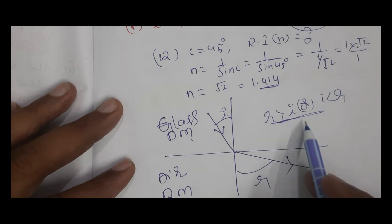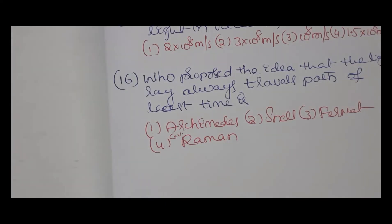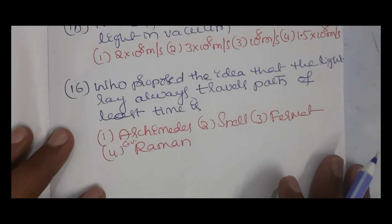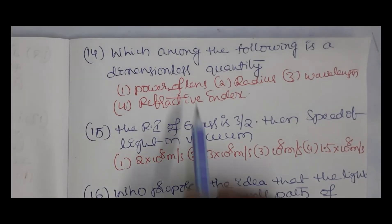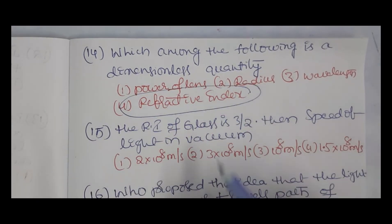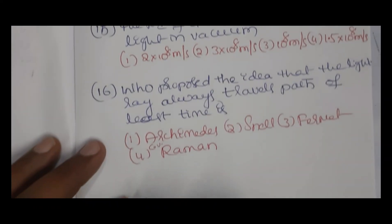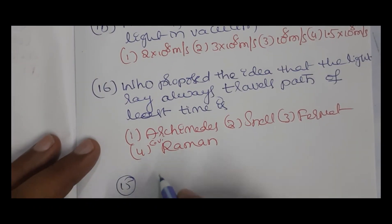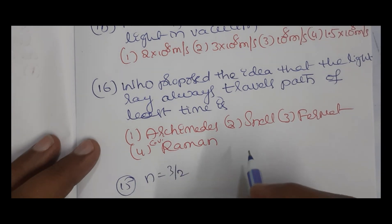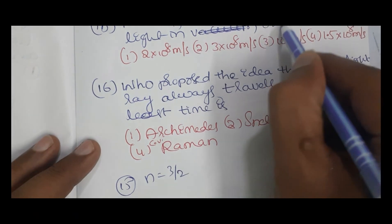Question 14: which among the following is a dimensionless quantity? Refractive index is dimensionless. Question 15: refractive index of glass is 3/2. Find the speed of light in the glass — not in vacuum.